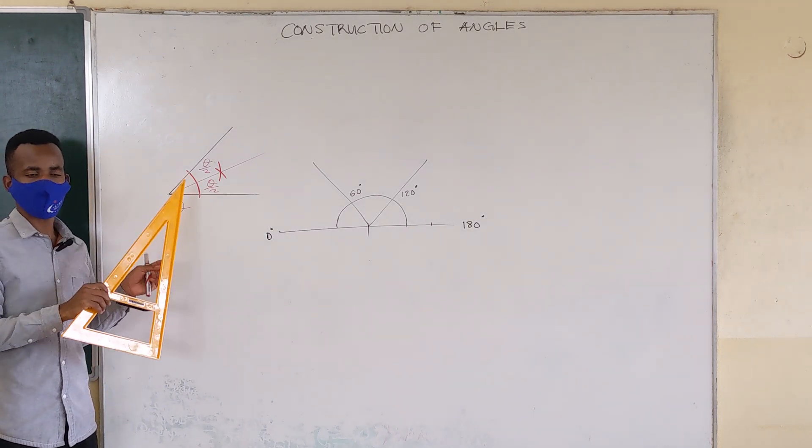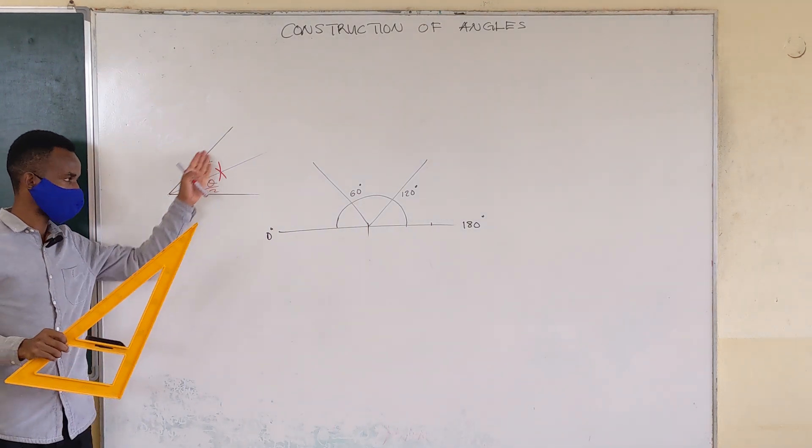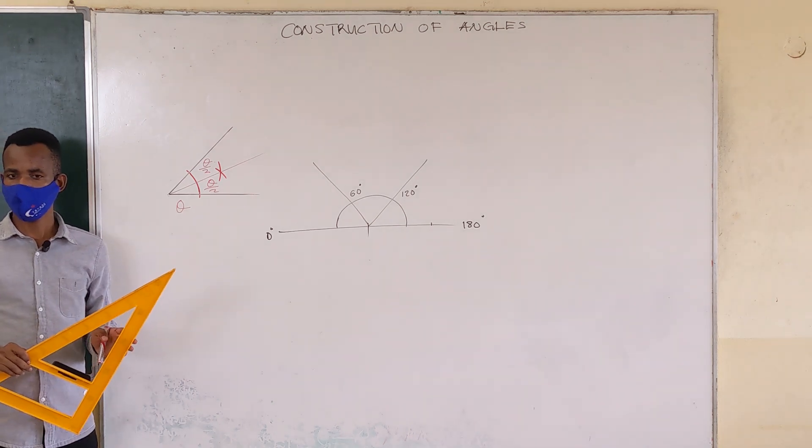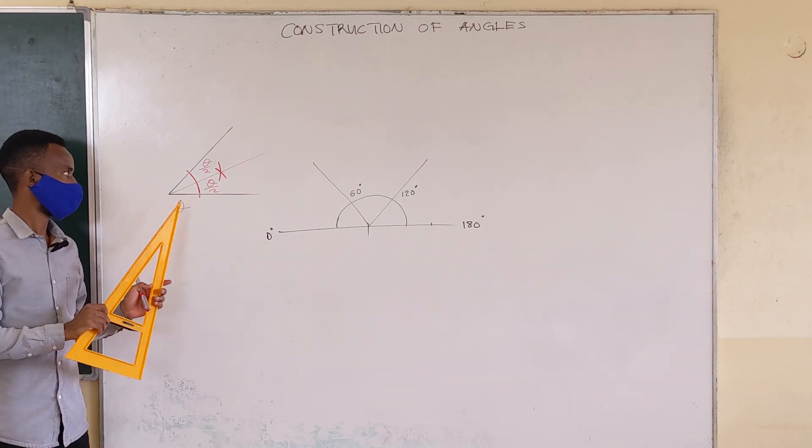It can be 30 degrees, it can be 60 degrees, it can be any angle. As long as two lines are meeting like that, you want to find the center point. This is how we construct the angle bisector.